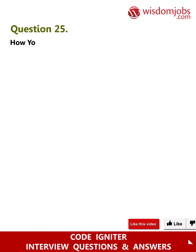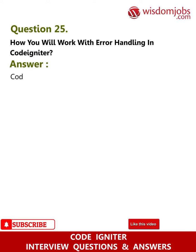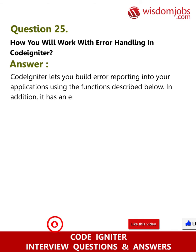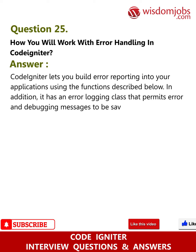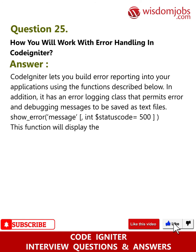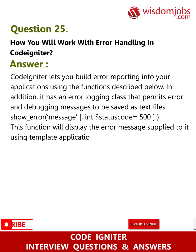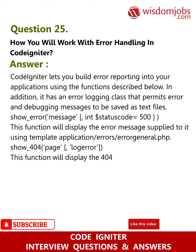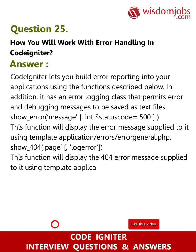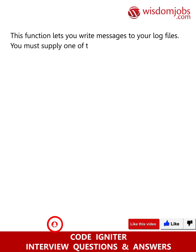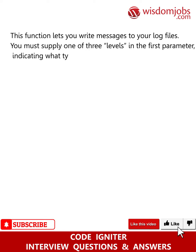Question 25: How will you work with error handling in CodeIgniter? Answer: CodeIgniter lets you build error reporting into your applications. It also has an error logging class that permits error and debugging messages to be saved as text files. show_error($message, $status_code = 500) displays the error message using the template application/errors/error_general.php. show_404($page) displays the 404 error message using application/errors/error_404.php. log_message($level, $message) lets you write messages to your log files, with levels: debug, error, or info.